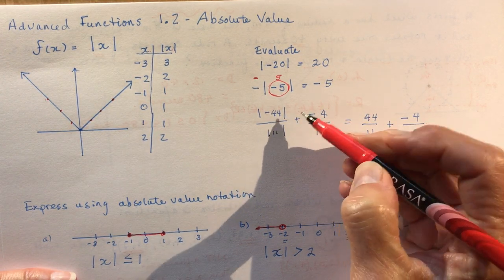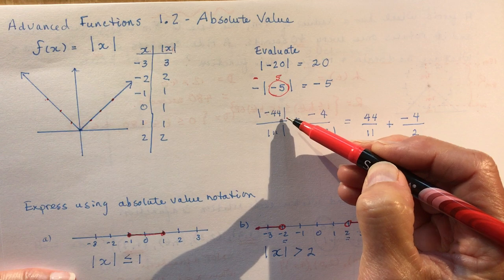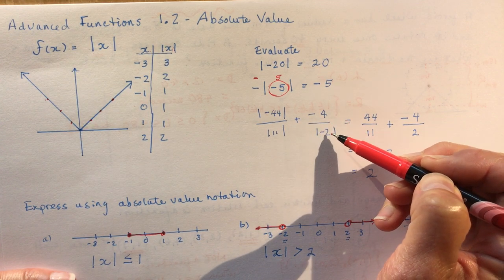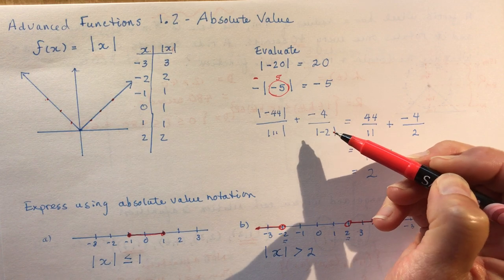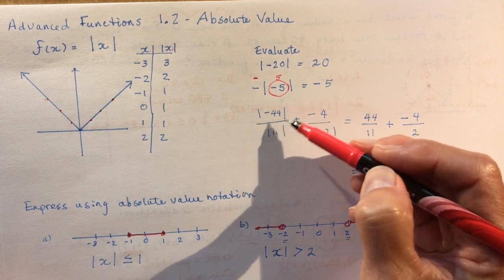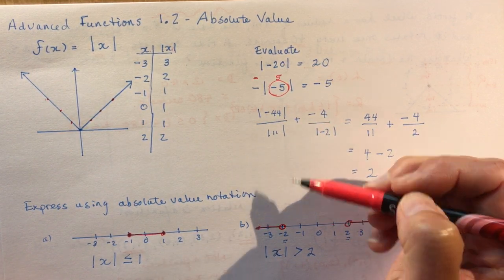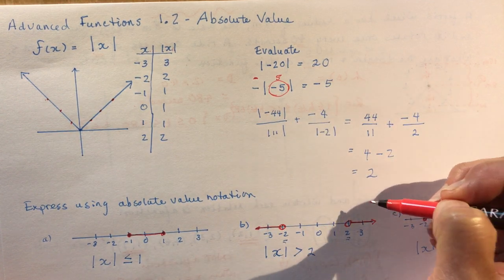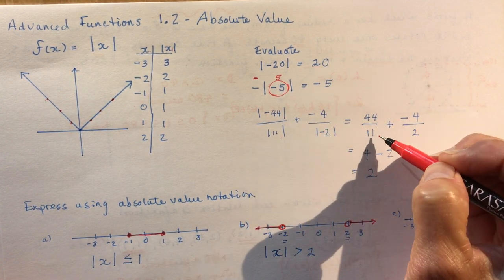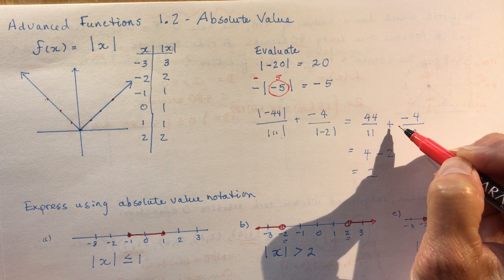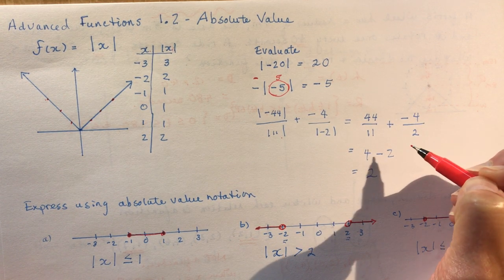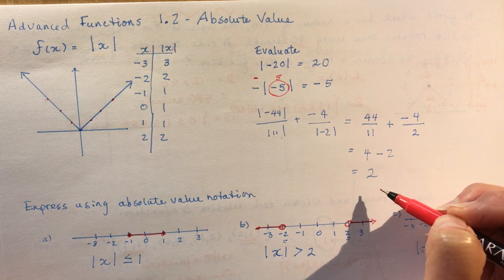This question here I have the absolute value of negative 44 over 11 plus minus four over minus absolute value of two. You want to get rid of these absolute value signs first. The absolute value of negative 44 is 44, absolute value of 11 is 11, and I'm adding negative 4 divided by 2. So that gives me 4 minus 2 is 2.